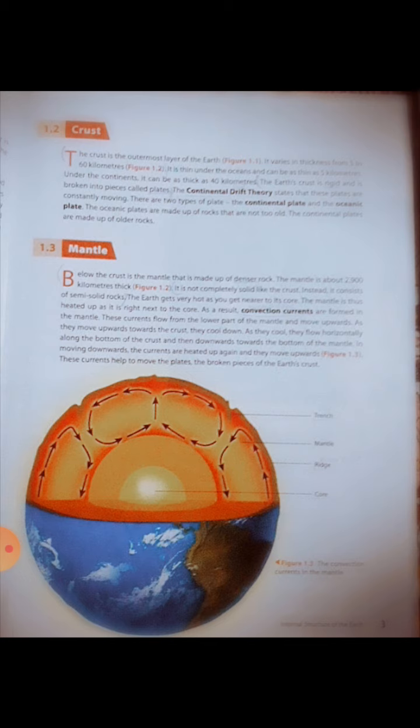The earth gets very hot as you get nearer to its core. The mantle is thus heated up as it is right next to the core. As a result, convection currents are formed in the mantle.